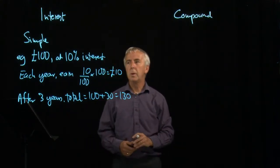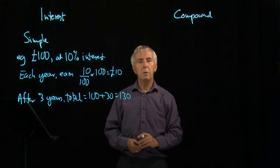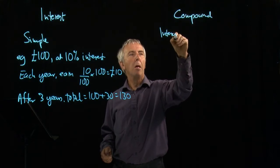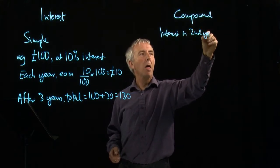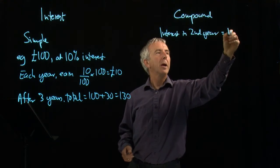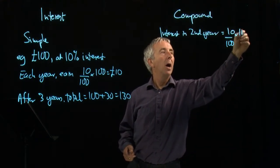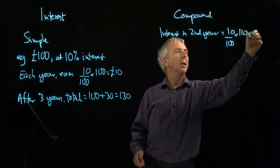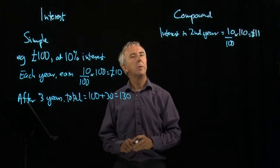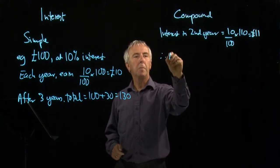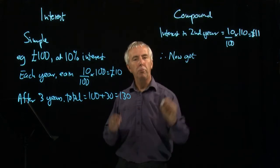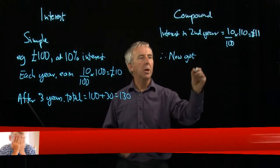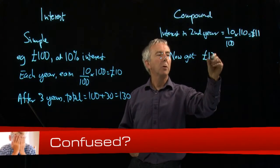This time after your first year you have £110, so the next year the interest in the second year is 10% of £110 because you've effectively invested £110 with them, and that comes to £11. So you've now got, you started with £100, you've gained £10 interest in the first year then you've got £11 in the next year, so you've now got £121.